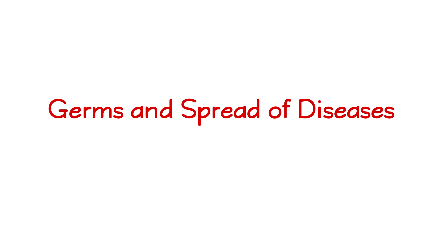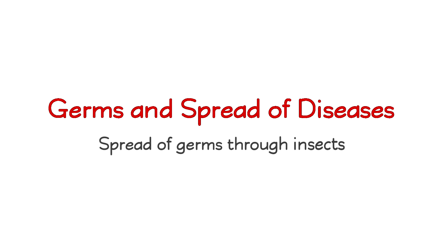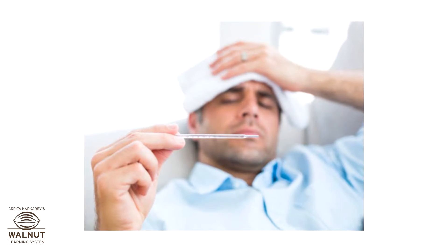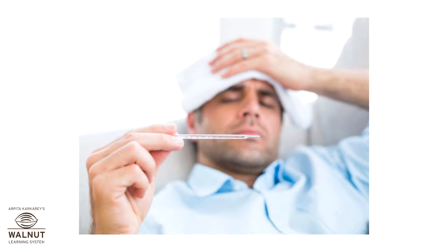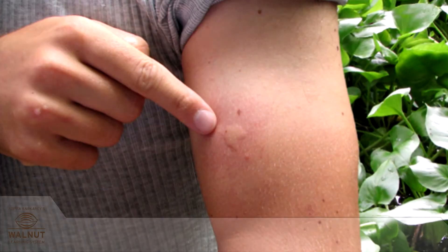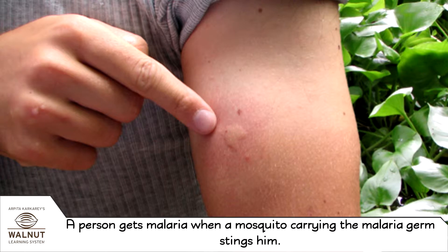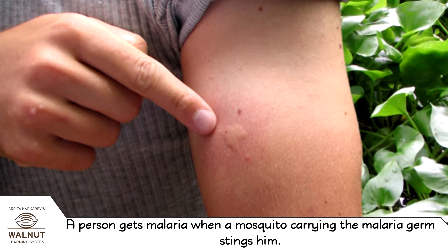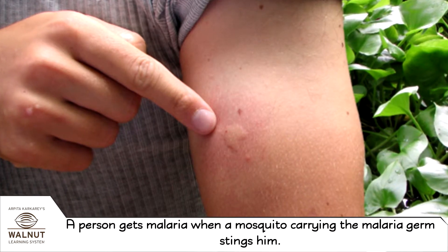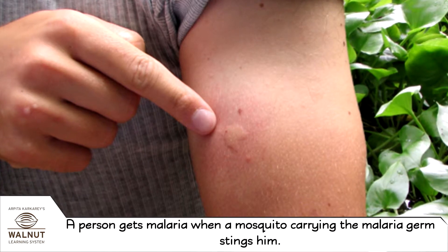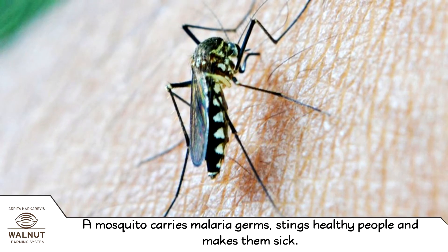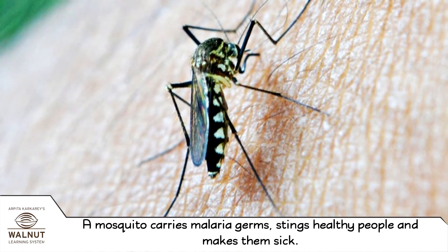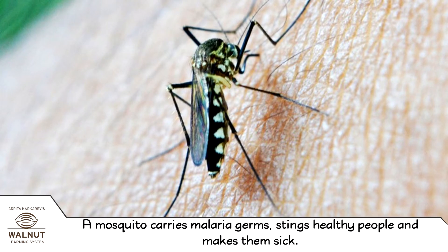Germs and spread of diseases — spread of germs through insects. Have you seen someone who is sick with malaria? A person gets malaria when a mosquito carrying the malaria germ stings him. A mosquito carries malaria germs and stings healthy people, making them sick.